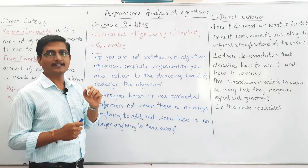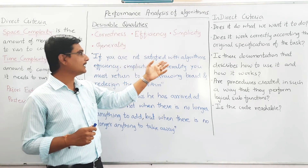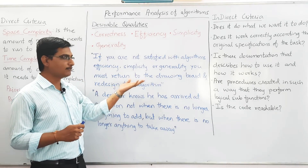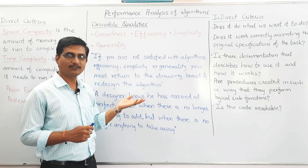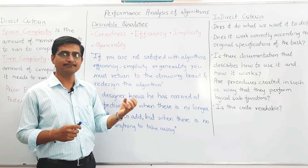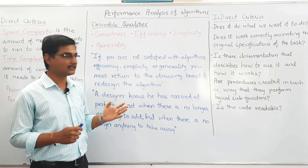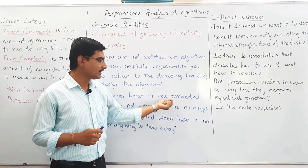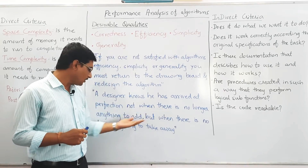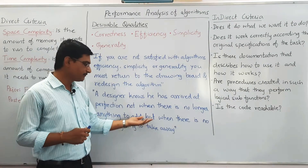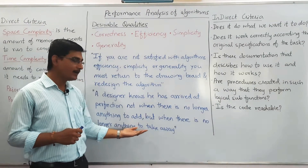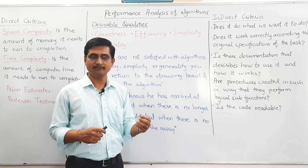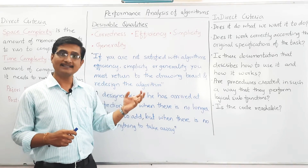There are some good quotes related to these: if you are not satisfied with the algorithm's efficiency, simplicity, and generality, you must return to the drawing board and redesign the algorithm. Another famous quote states that a designer knows they have arrived at perfection not when there is nothing left to add, but when there is nothing left to take away. This means if nothing can be taken from the algorithm, it is the most simple and perfect algorithm.